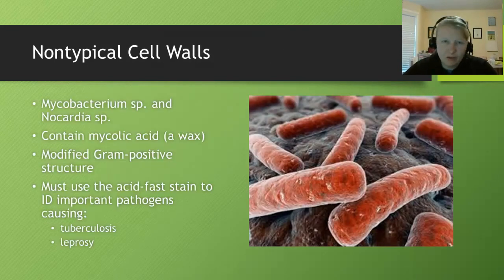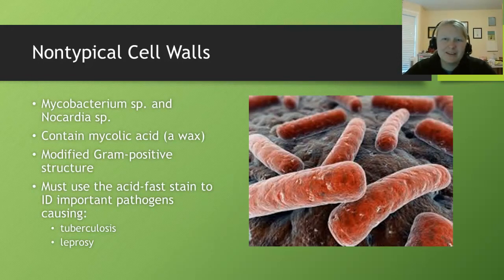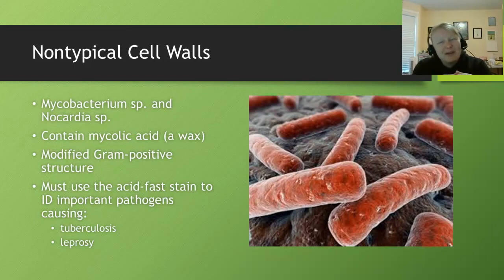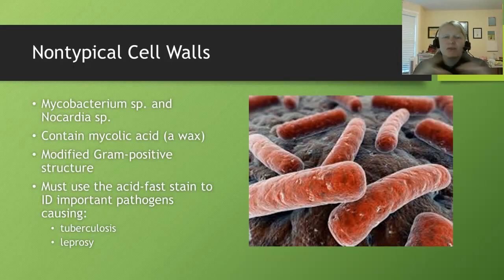There's a caveat to the gram-positive/gram-negative golden rule — there are cells that don't have typical cell walls. These are Mycobacterium and Nocardia. These pathogens are responsible for diseases such as tuberculosis and leprosy, so they're pretty serious. They have a structure similar to the gram-positive cell wall, but they have a waxy outer layer that doesn't allow them to be stained the same way. Instead, we use an acid-fast stain. Just be familiar with the fact that some cells aren't gram-positive or gram-negative.